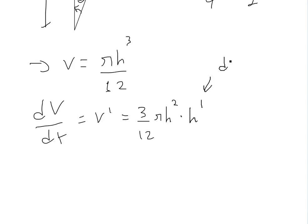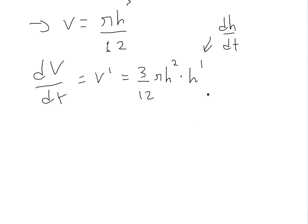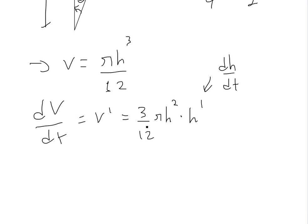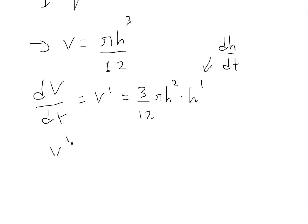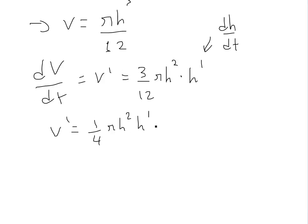And then always use a chain rule, because this is a function of time. So this is going to be dh/dt. Or I'll just write h prime. And just make a note. This is dh/dt. Same thing. It's a different notation. So now we have this over here. You can simplify this one here. We'll get basically V prime is equal to 1/4 π h² times h prime.